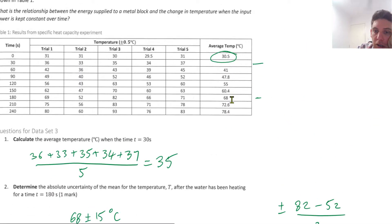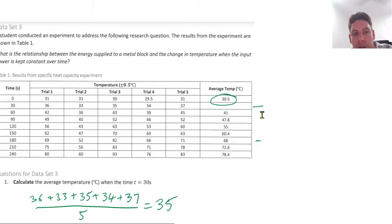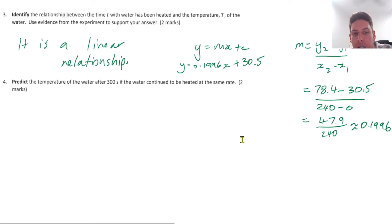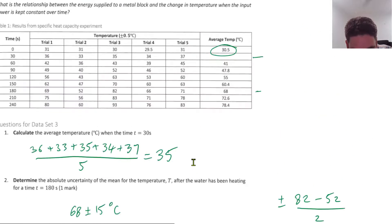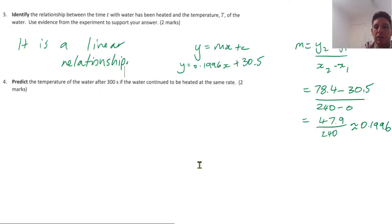Yeah, and you can see that it's slowly going up. You could show this further by doing it in intervals. Predict the temperature of the water after 300 seconds if the water continues to heat at the same rate. So then we use this equation that we just found and we sub in x equals 300.